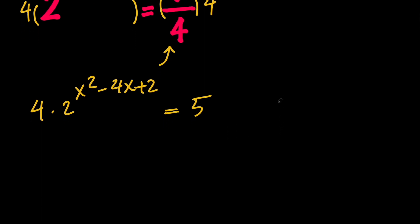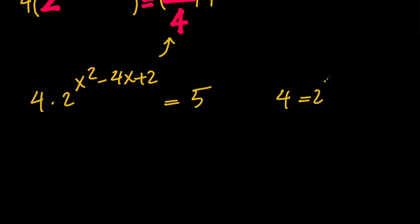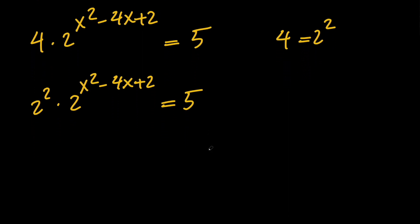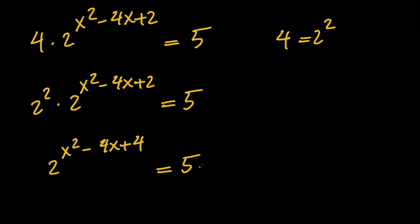Now, notice that 4 equals 2 squared. So we have 2 squared times 2 to the power of x squared minus 4x plus 2 equals 5. Whenever we have a product of exponents with the same base, we need to go ahead and add up the powers. So on the left-hand side, we're going to have 2 to the power of x squared minus 4x plus 4, and this expression equals 5.